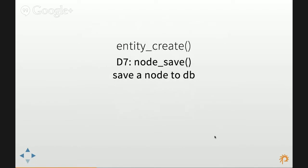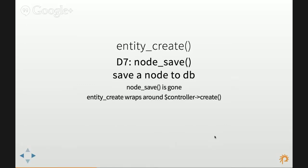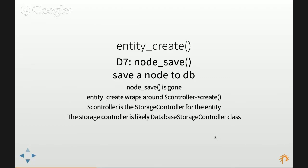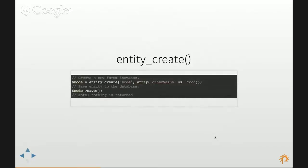node_save is gone. Instead, use entity_create, which you can use to save a node to the database. entity_create is a procedural wrapper around the create method inside the default storage controller for the entity. So if you want to create a node programmatically, call entity_create, pass in the entity type, pass in an array of options, and then invoke the save() method on the returned entity.